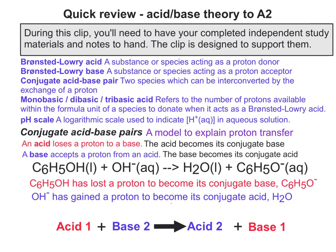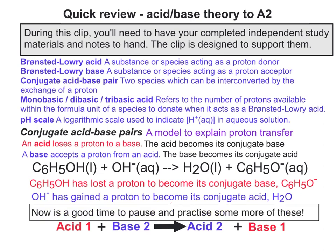In the final example, phenol has lost a proton to become its conjugate base, the phenoxide ion C6H5O-. And at the same time, OH- has gained that proton to become its conjugate acid, water. Now is a really good time to pause the clip and find some examples — maybe in a textbook or a worksheet — and practise this idea because it will come up in exams and it's easy marks. You just have to know instinctively what to look for.